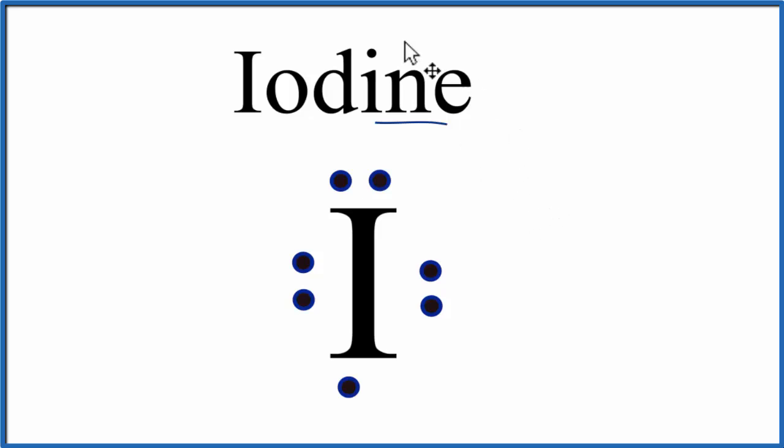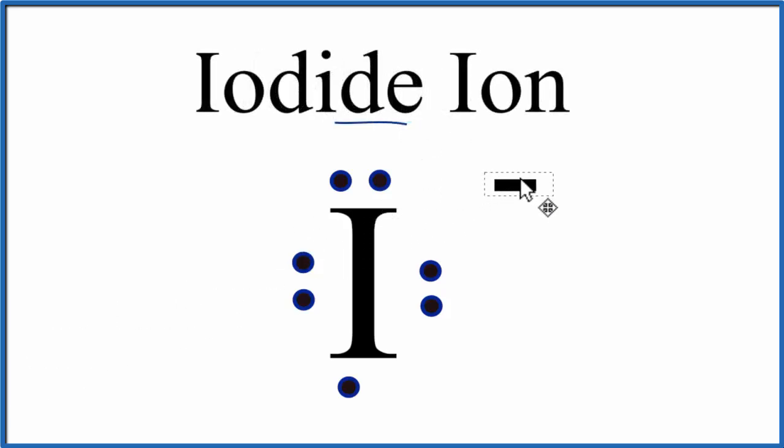So this is the Lewis structure for just iodine, neutral iodine. It doesn't have a charge. We're interested in iodide, which has a minus charge.